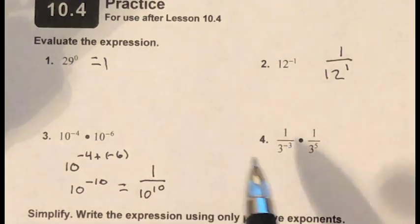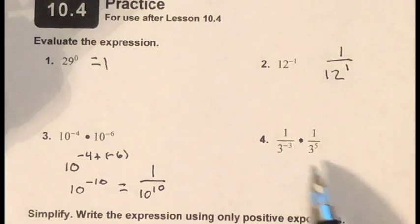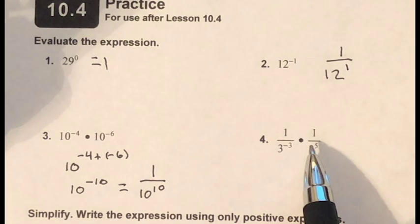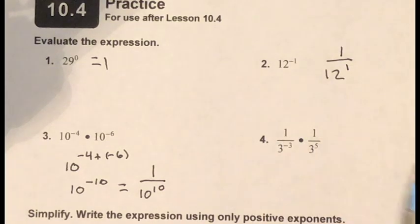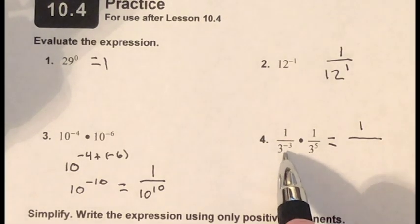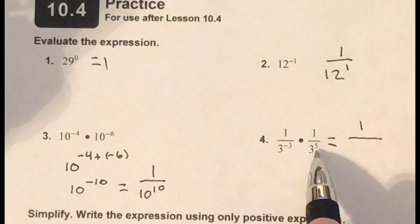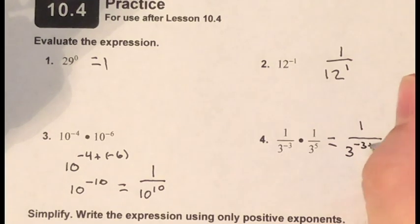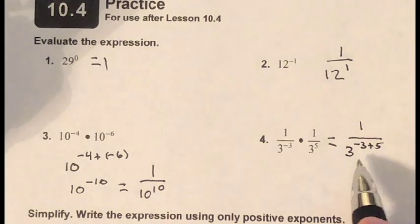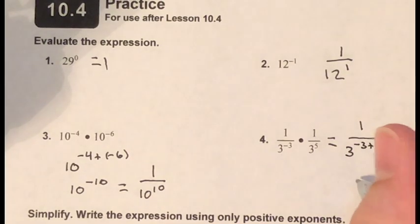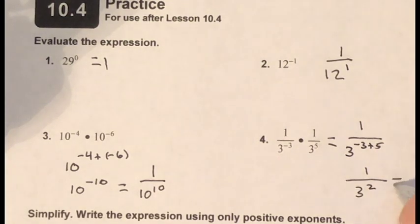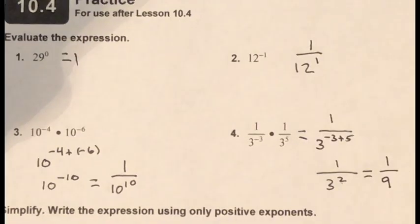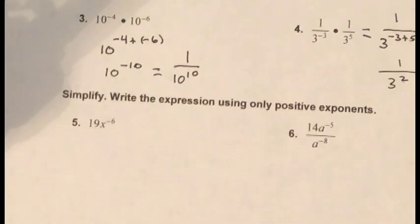Problem four: treat this like a fraction. Multiplying across the numerators gives one, then in the denominator I have three to the negative three being multiplied by three to the fifth. I simply add those exponents: negative three plus five equals two, giving me one over three squared, which is one over nine.